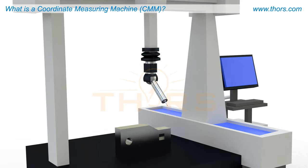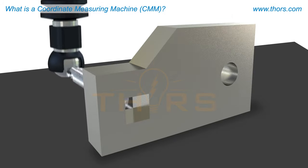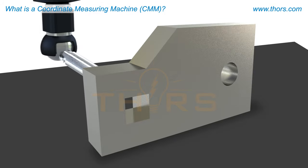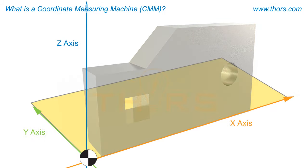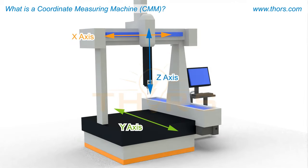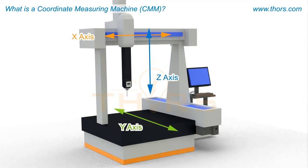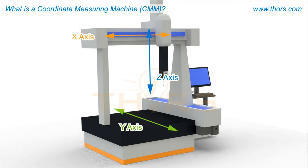A CMM measures the geometric features by acquiring the coordinates of points on the object's profile. The coordinates of points are a set of three values that determine a point's location relative to a defined origin in a three-dimensional space. These are acquired by a mechanical system which moves a probe along the X, Y, and Z axes.